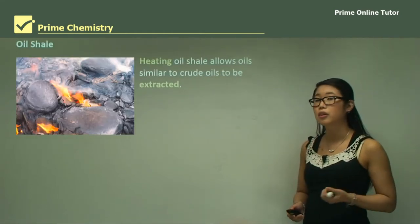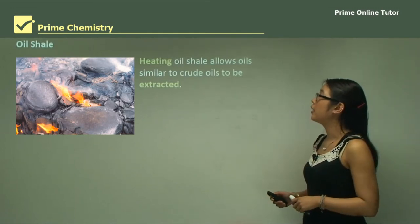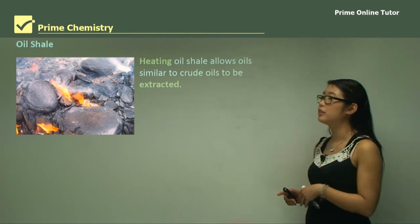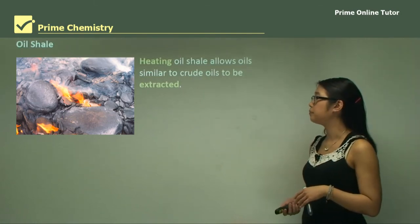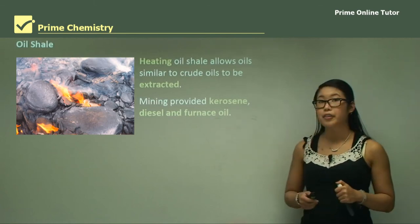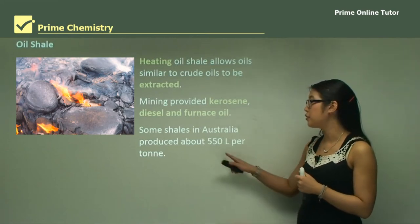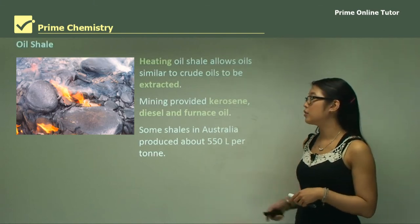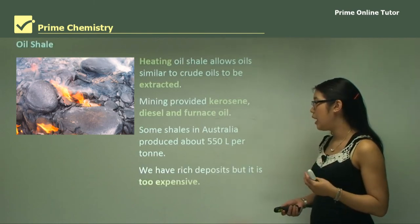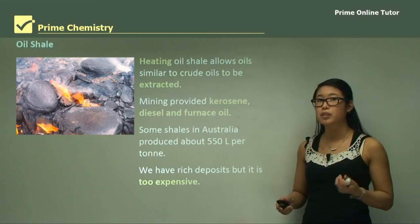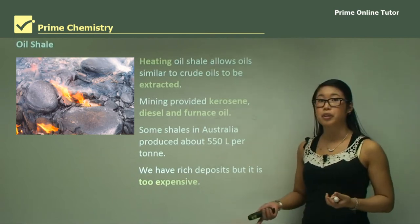Oil shale is a type of porous rock which houses a lot of hydrocarbons and is used in heating. We heat the oil shale, increasing the temperature to allow oils of similar boiling points to be extracted. This provides kerosene, diesel and furnace oil. Some shales in Australia produce about 550 litres per tonne of shale. Australia has rich deposits, but because it's not efficient to extract per tonne of rock, it's too expensive to use as a fuel.